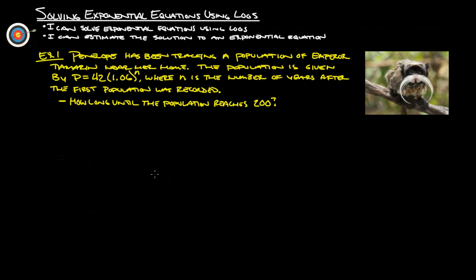So, this is back to an example we did earlier in this unit here. Penelope's been tracking a population of Emperor Tamarin near her home. Population is given by this formula here, where n is the number of years after the first population was recorded. How long until the population reaches 200? So, here's what we want to do. This 200 is going to go in for this population right here. So we simply write 200 equals 42 times 1.06^n. We know whenever we get an exponent, that's our variable, we're going to have to use logarithms.